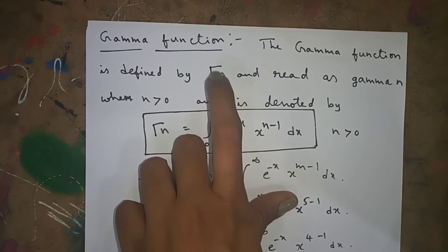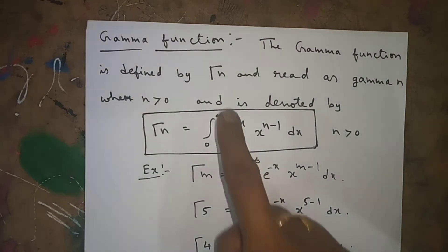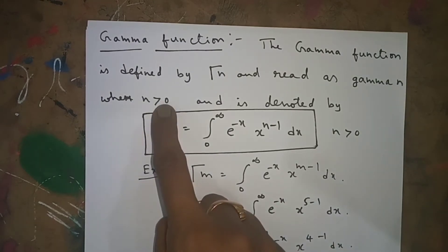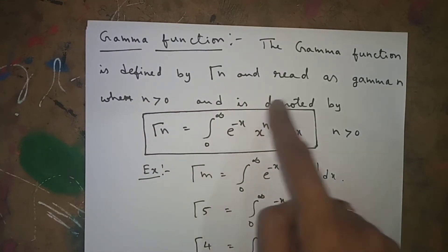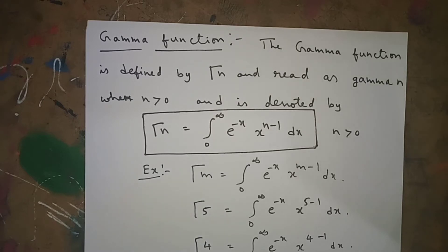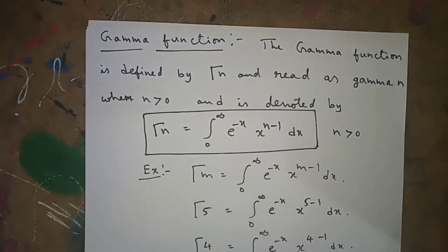Gamma of n is read as gamma n. The gamma function is defined when n is greater than 0, and is denoted as: gamma(n) = integral from 0 to infinity of e to the power of minus x, multiplied by x to the power of n minus 1, dx. This formula is very important and we will use it many times.